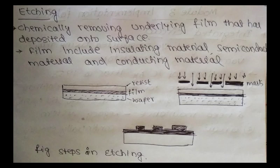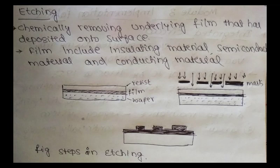One important processing step is etching — chemically removing the underlying film of materials that has been deposited on the surface. Films include materials such as aluminum and copper. The key to selecting which areas are affected is known as photolithography.